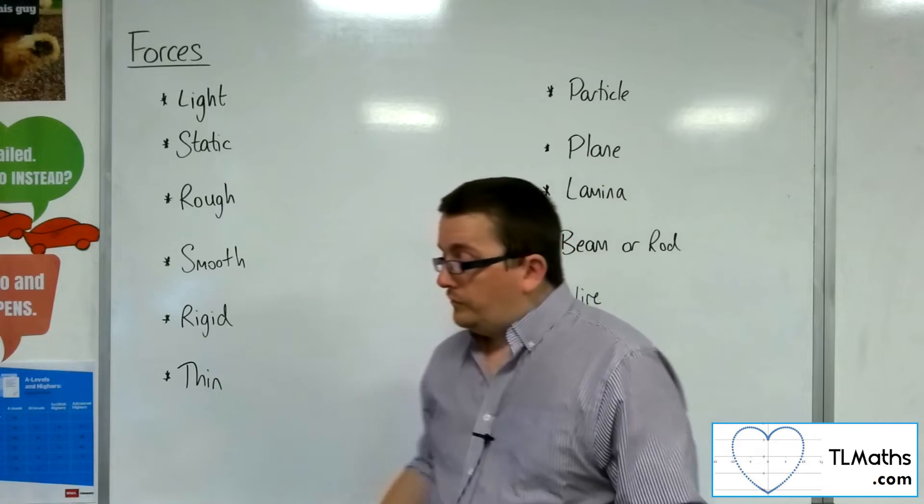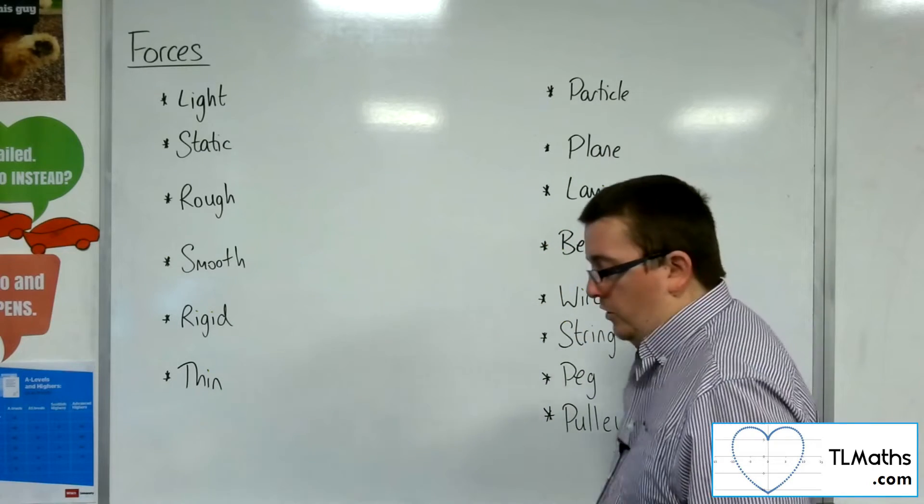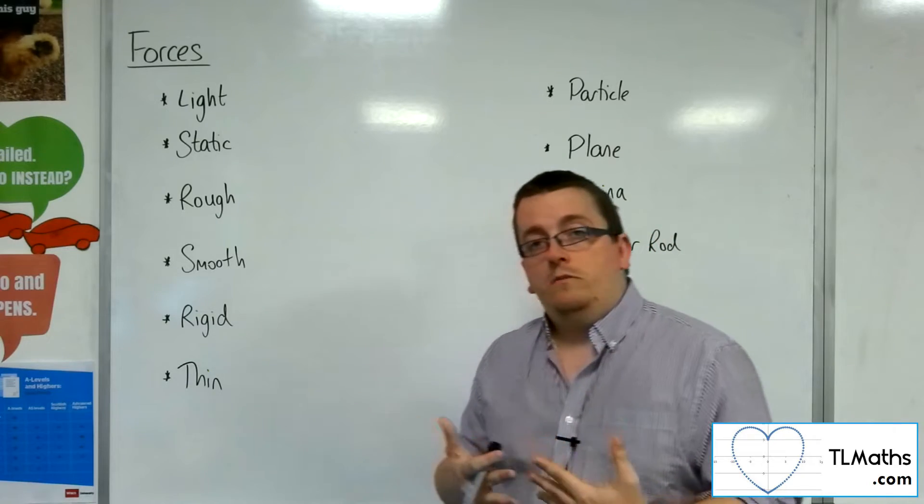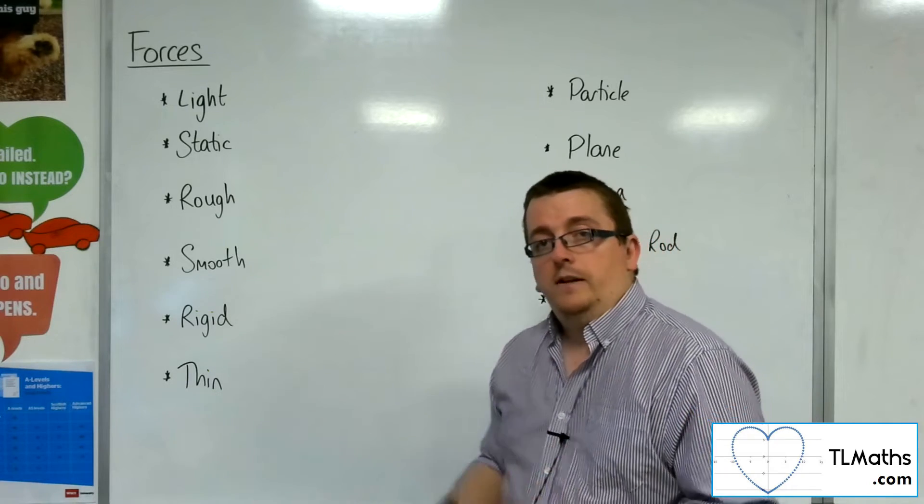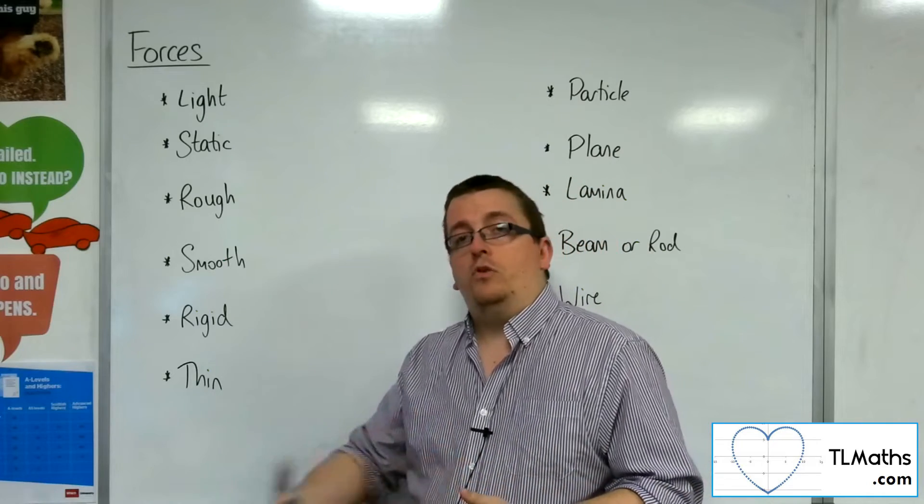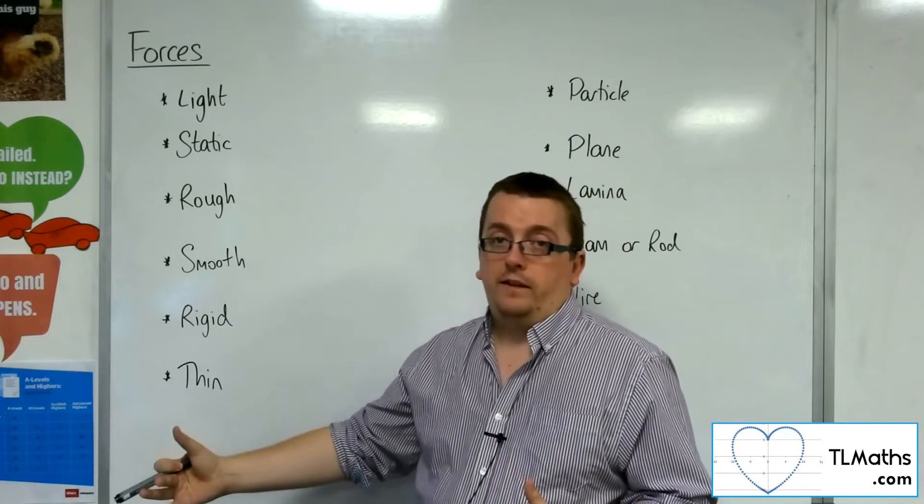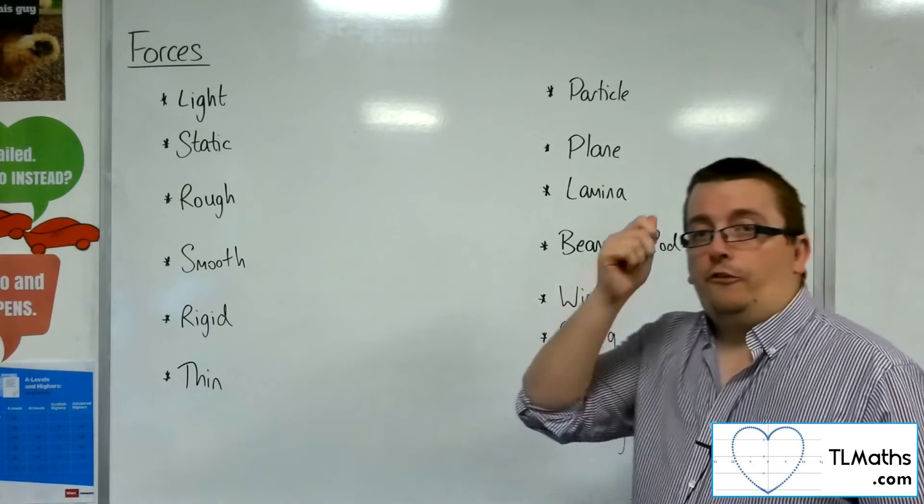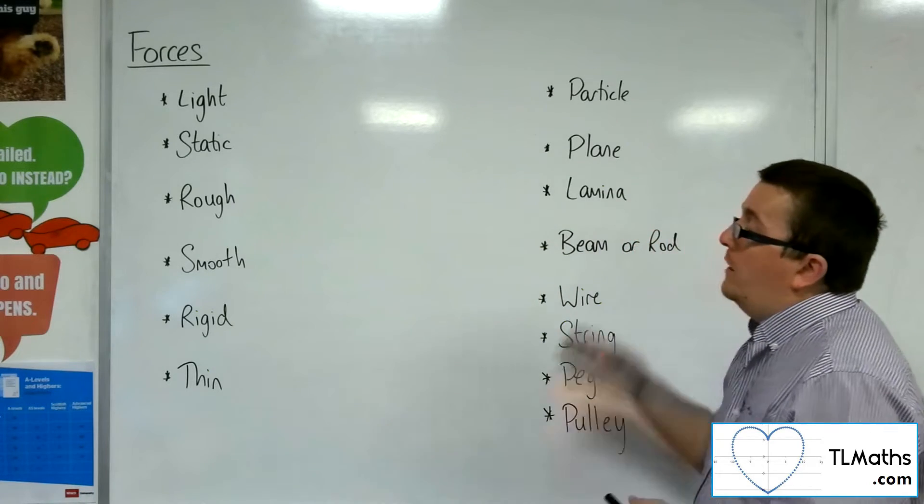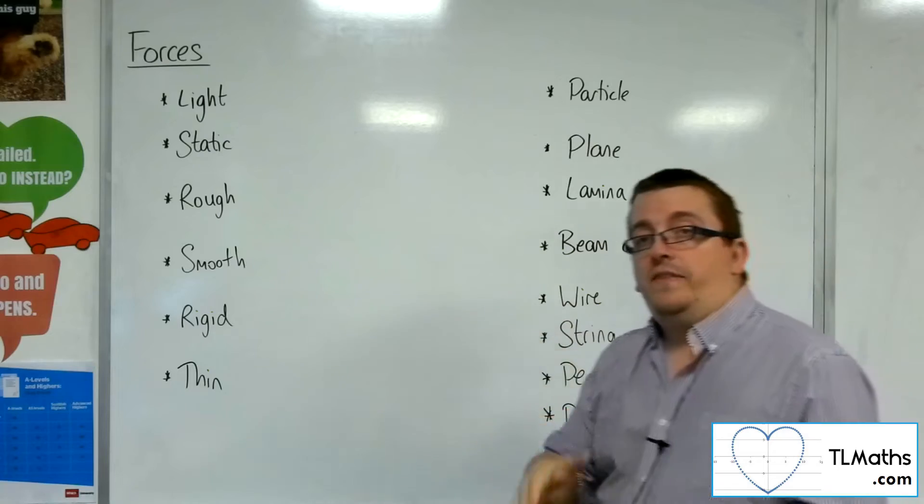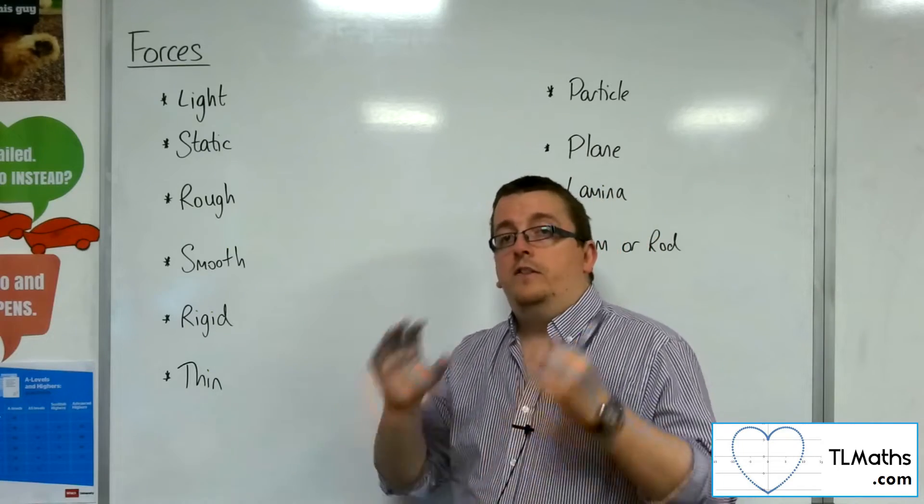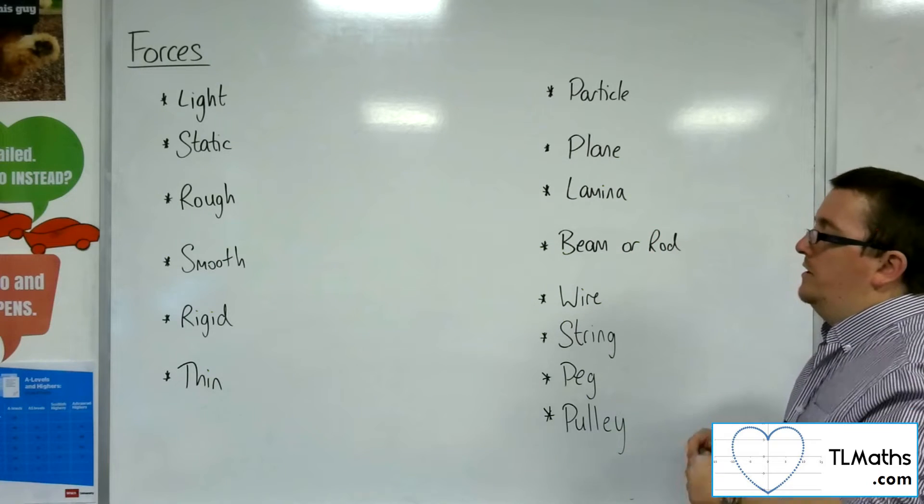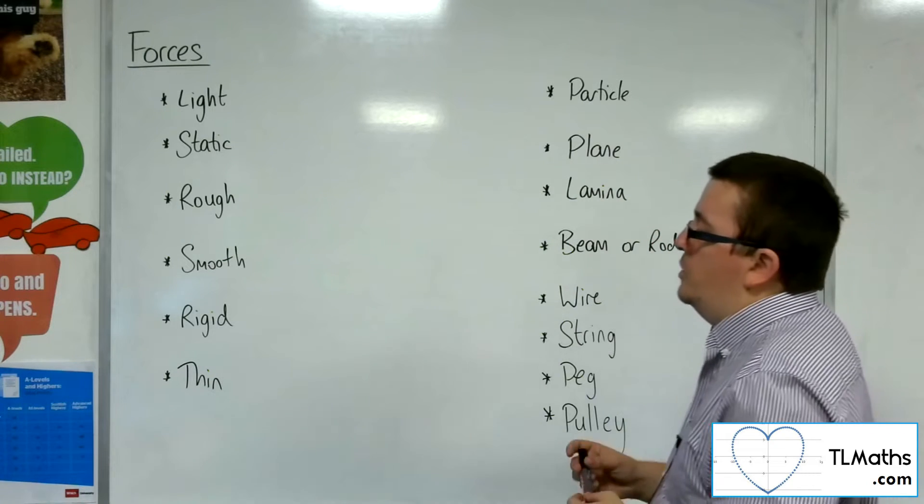If I was to push a block across the carpet, for example, I would meet more friction that's working against me than I would if I was pushing a block across a frozen lake. So rough means that there is friction involved, whereas smooth means that there is no friction to consider. The friction is negligible, so we don't need to concern ourselves with the friction in that problem.